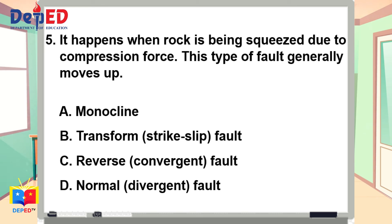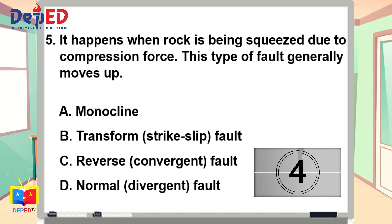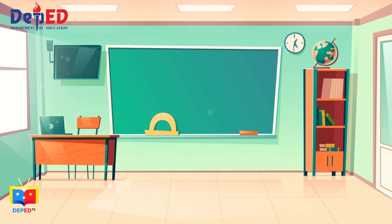Number five. It happens when rock is being squeezed due to compression force. This type of fault generally moves up. A. Monocline. B. Transform fault. C. Reverse fault. Or letter D. Normal fault.